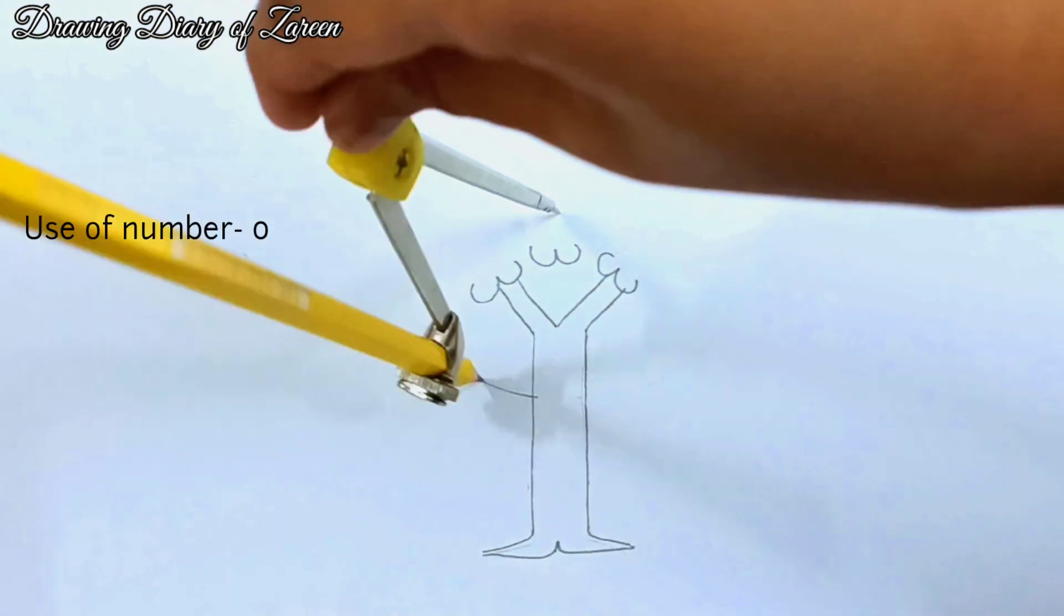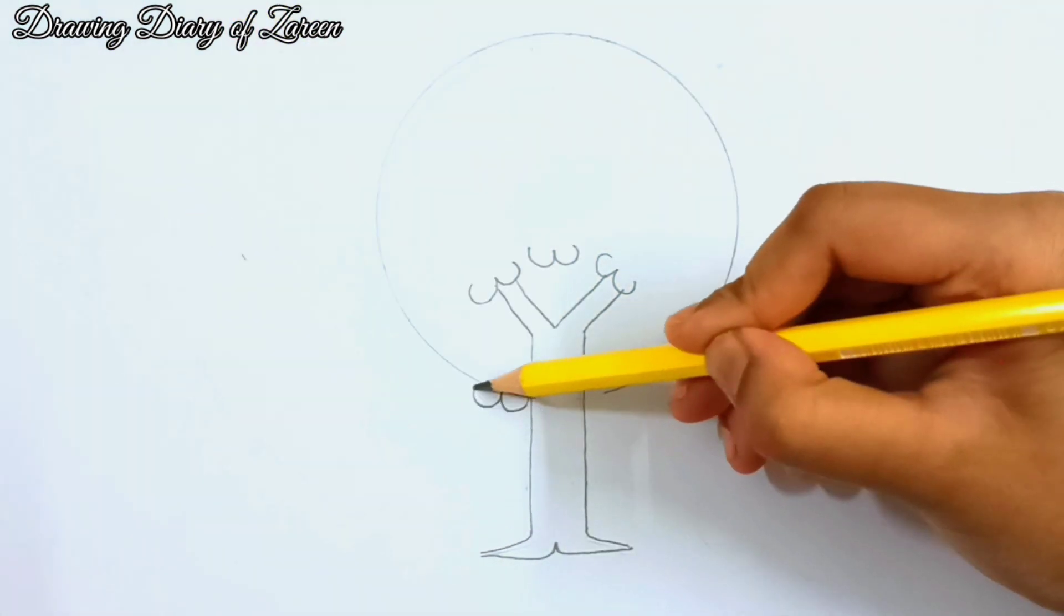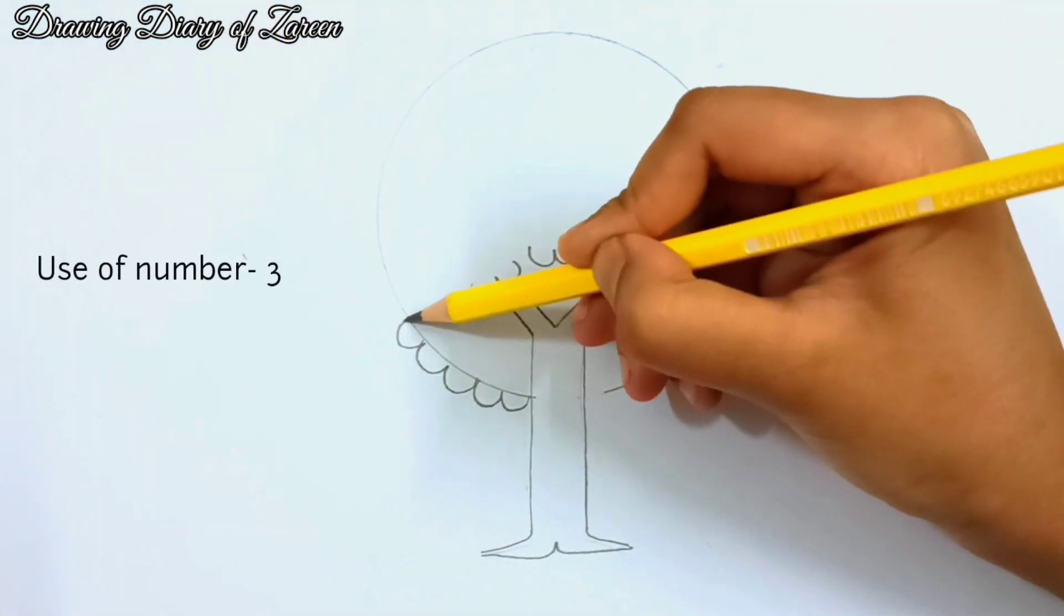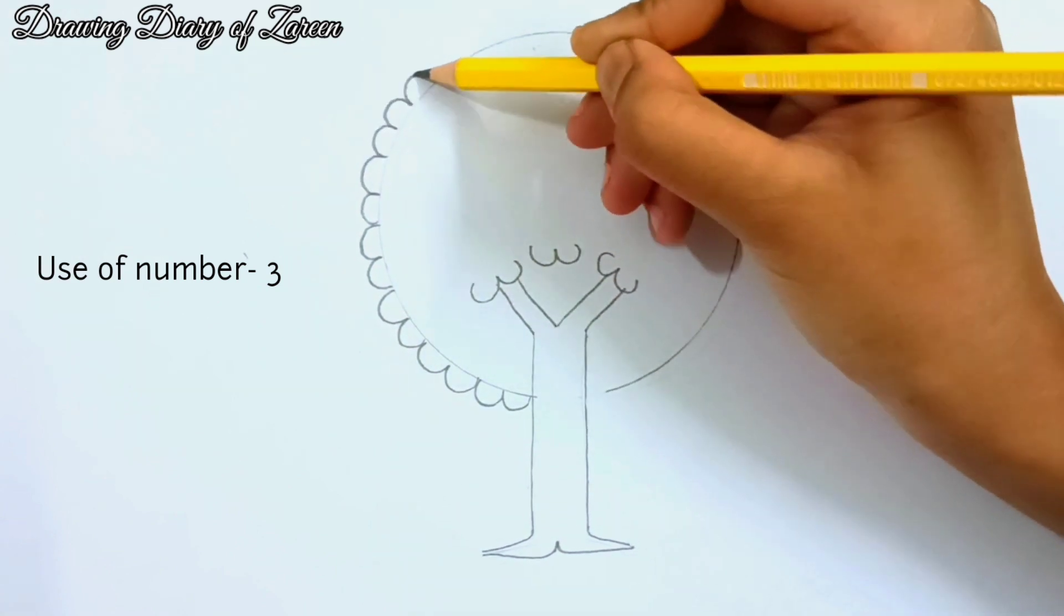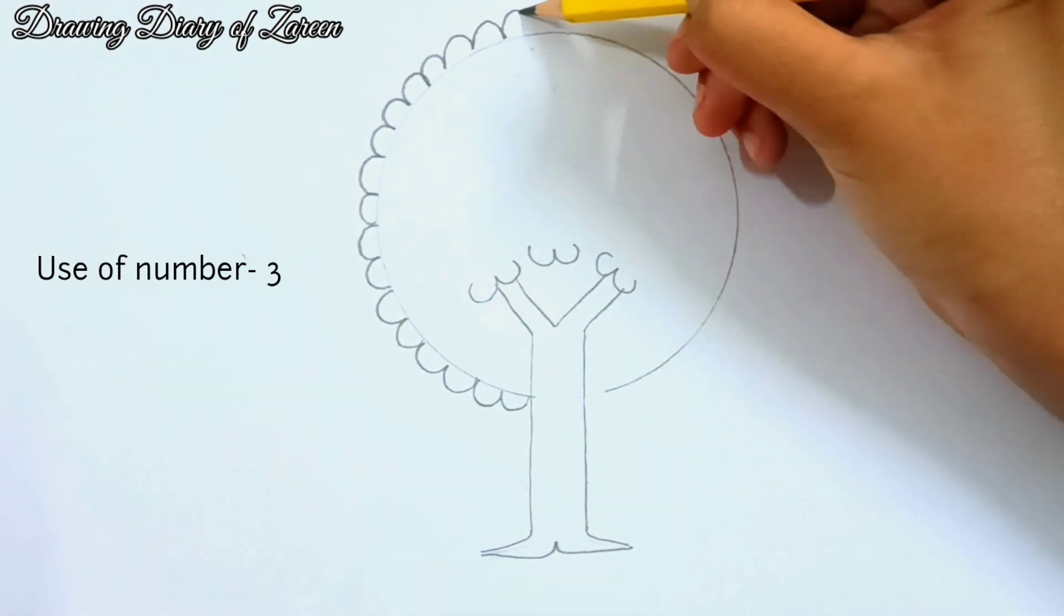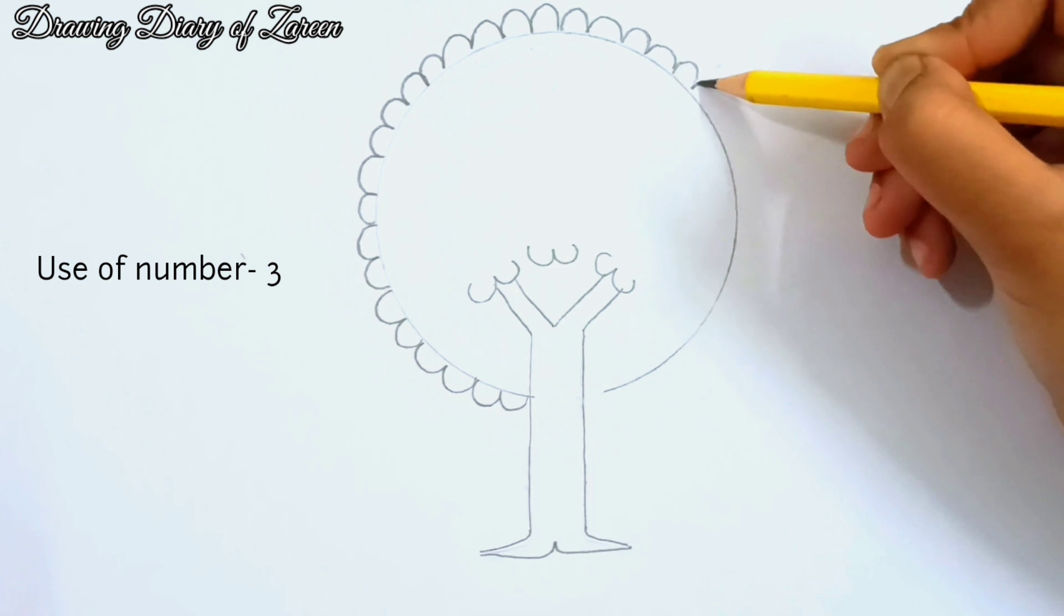We have to make a large 0 all over the head of the tree with a pencil compass. Now I'm going to add the number 3 around the circle like this. It will work as the leaves of the tree.